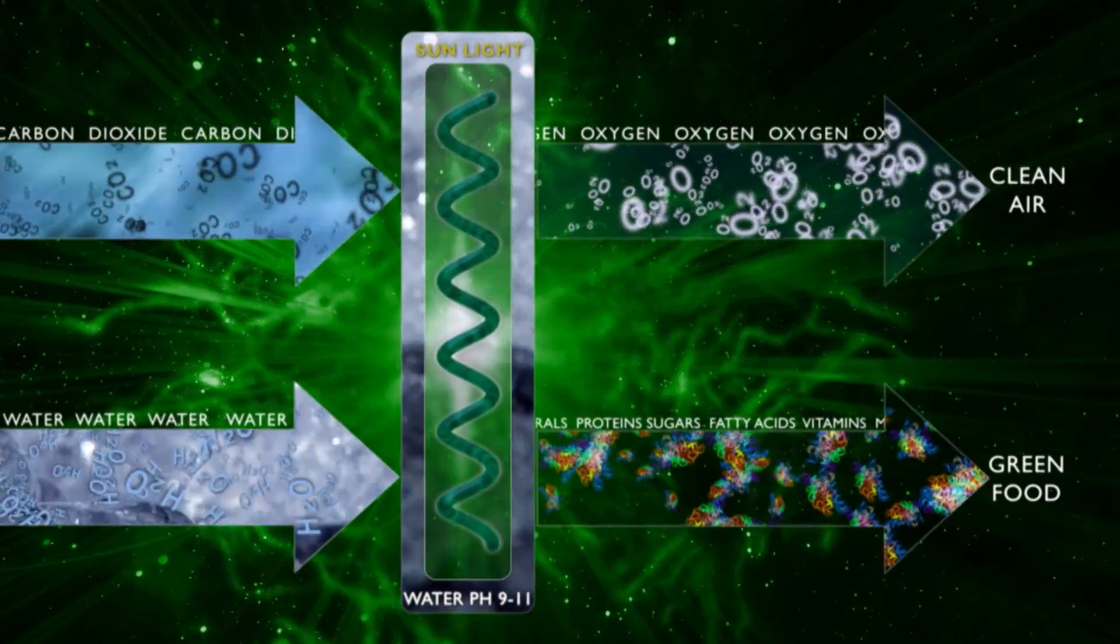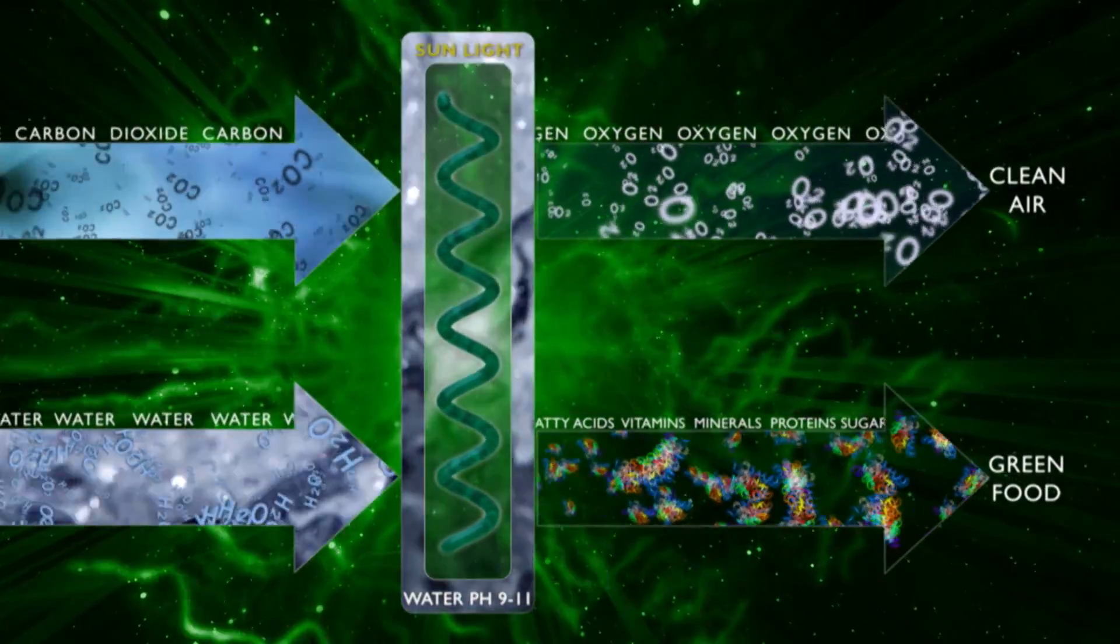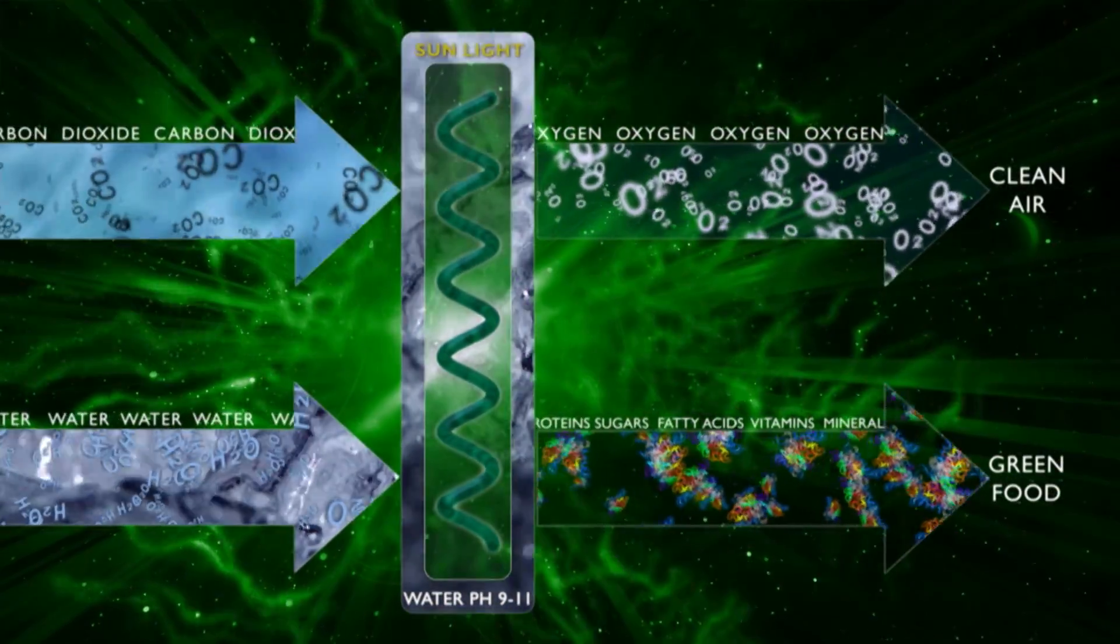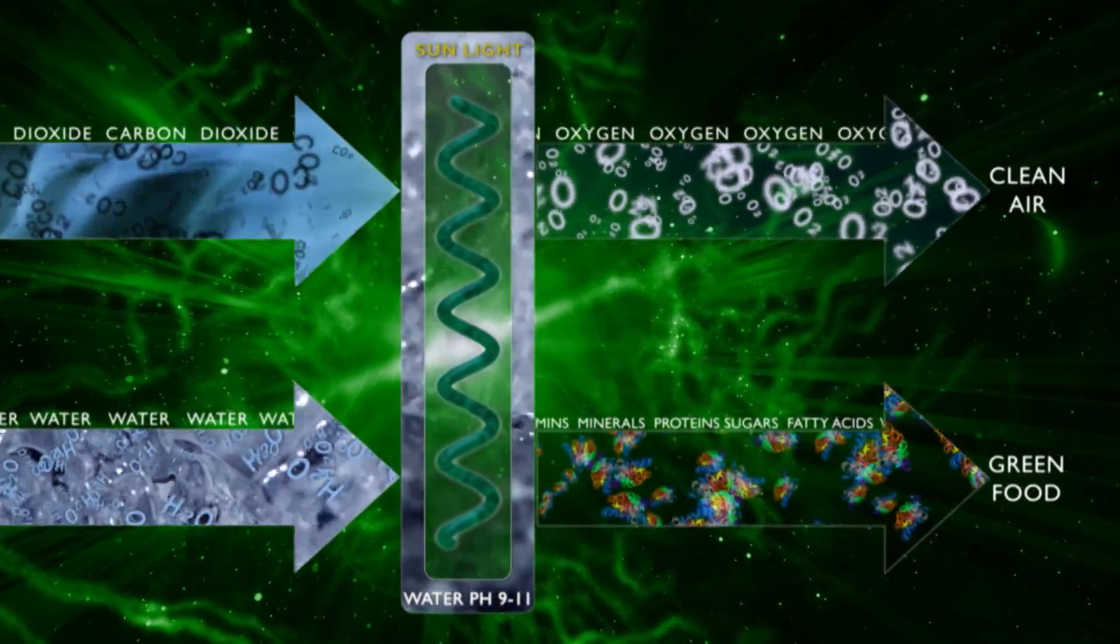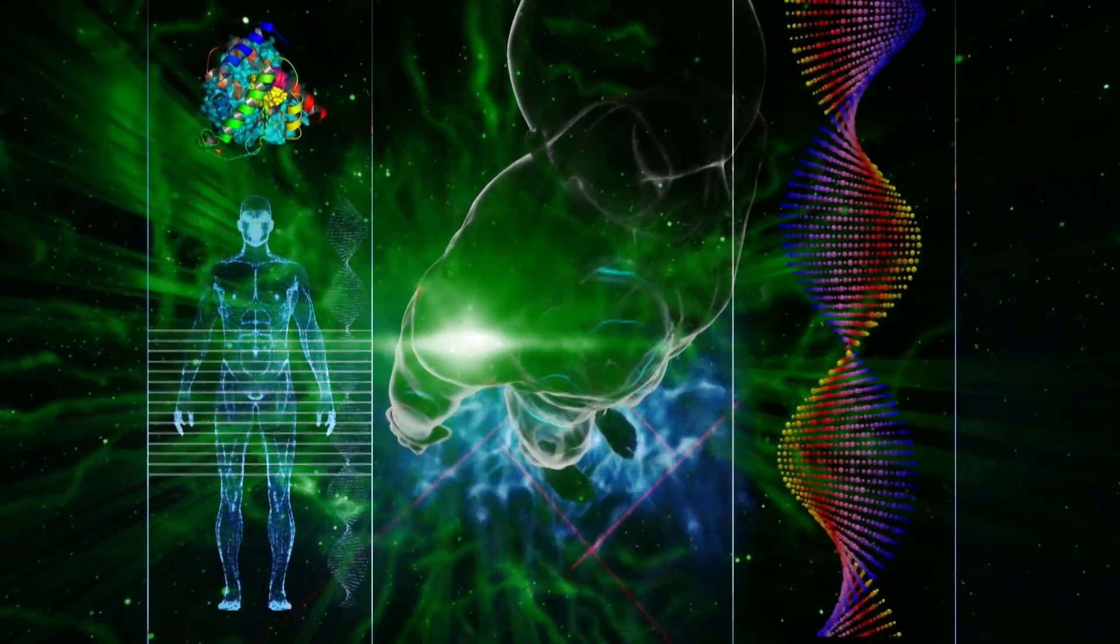Then, through a photosynthetic reaction, the cells produce protein, sugars, fatty acids and vitamins, as well as all the important minerals our bodies need.